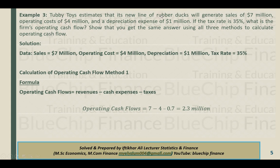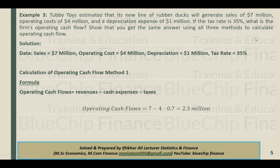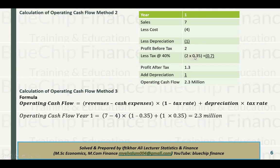Revenue is 7 million, cost is 4 million, depreciation is 1 million. So 7 minus 4 minus 1 equals 2 million profit before tax. Applying 35% tax rate on 2 million gives 0.7 million in tax. So 2 minus 0.7 gives profit after tax of 1.3 million. Add back depreciation of 1 million and operating cash flow is 2.3 million.